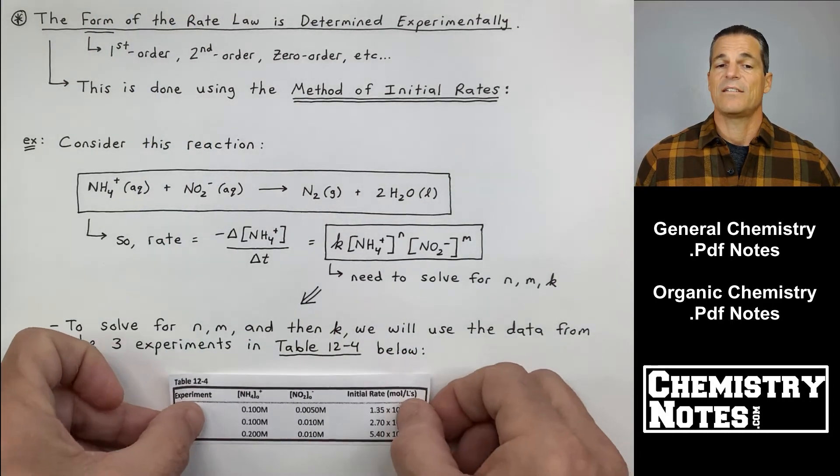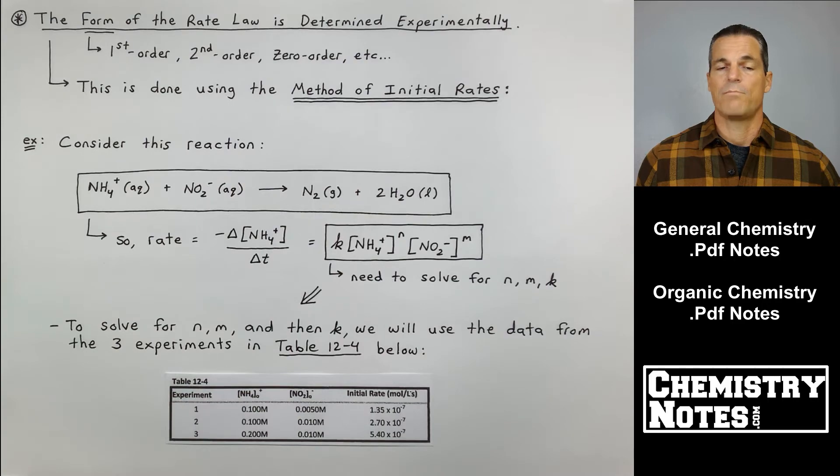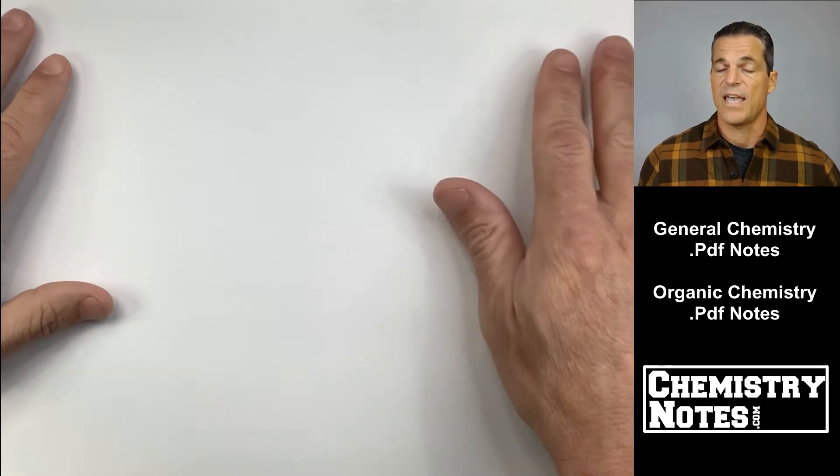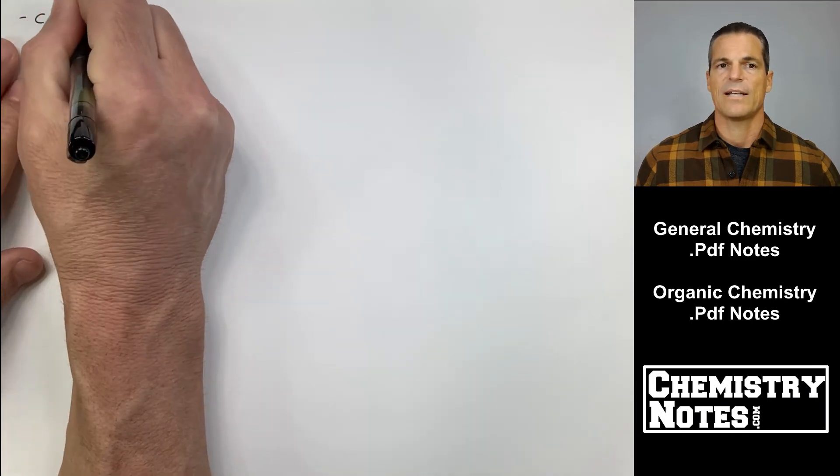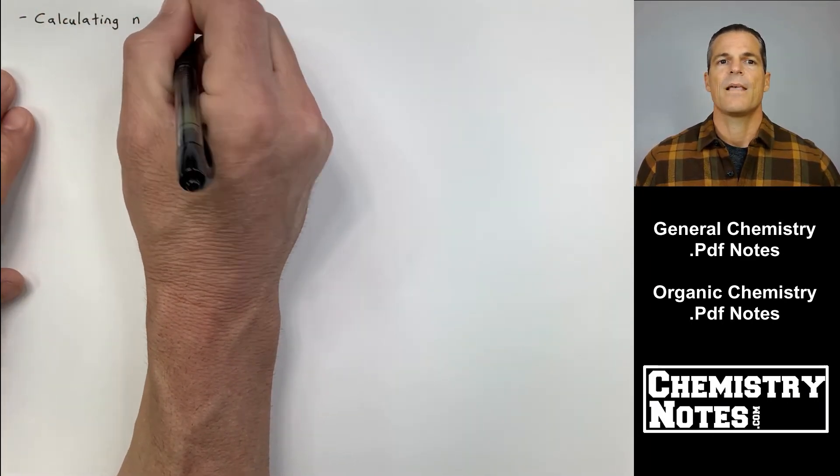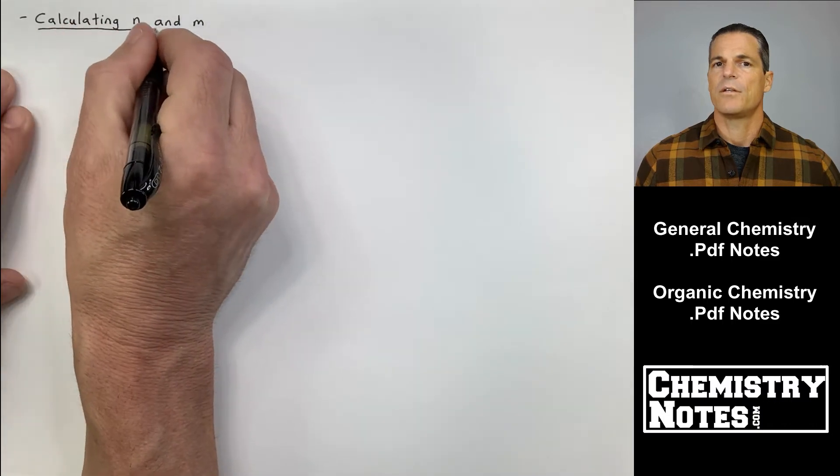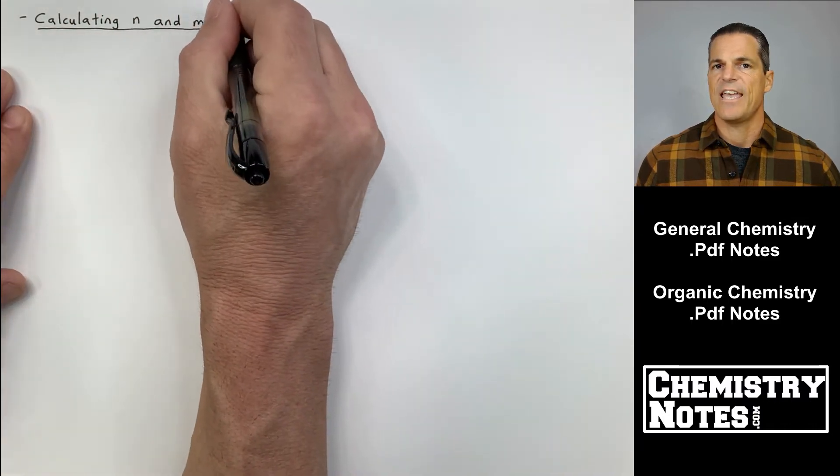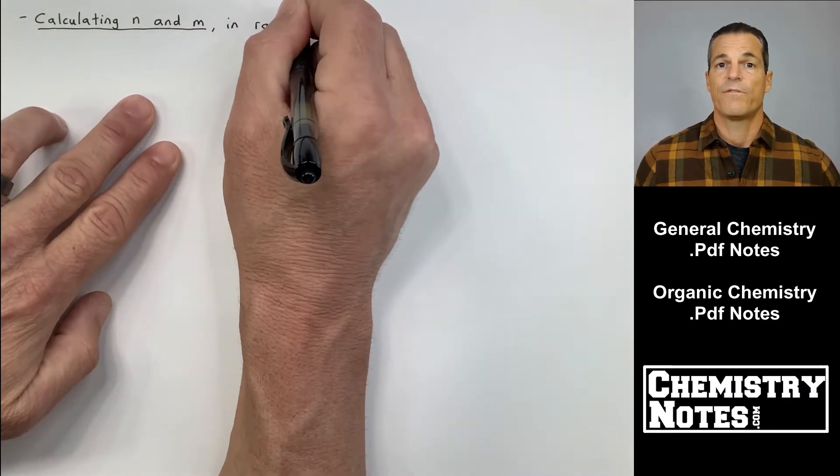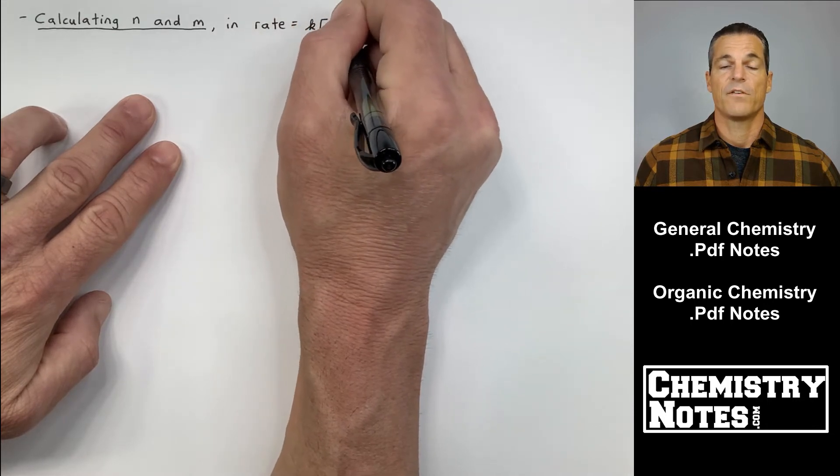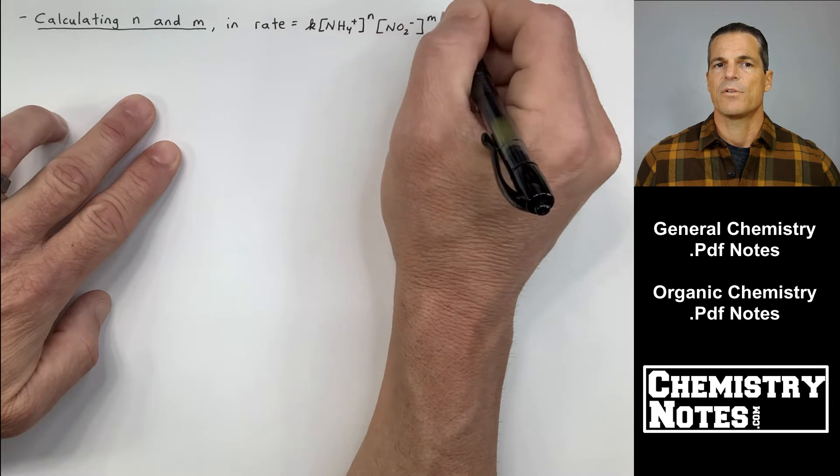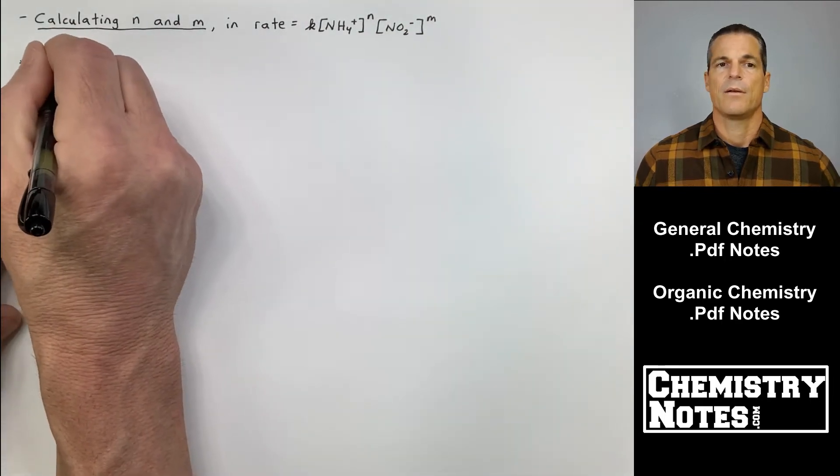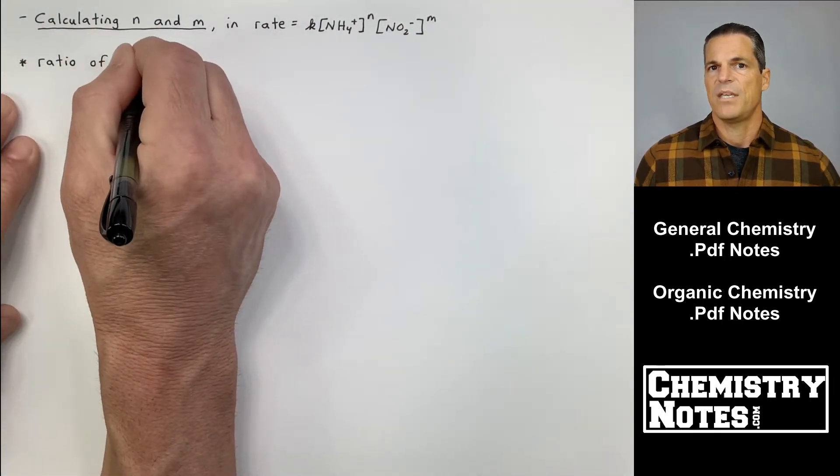We are given a data table, table 12-4. I'm going to post it again here on page two. You notice I mentioned you want to calculate K at the end, and we will. So our first object here is to calculate N and M. By the way, you can call these X and Y, it doesn't matter. I just call them N, M, P, et cetera.